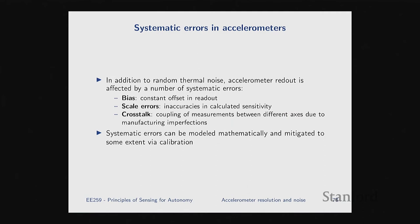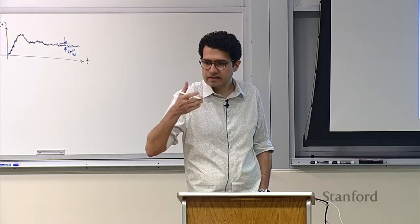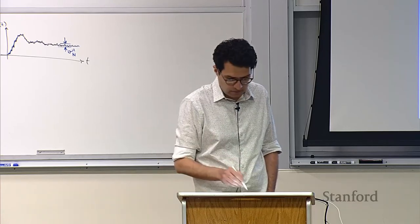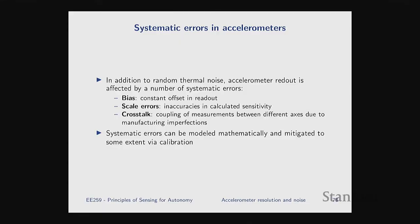In addition to noise, there are also systematic errors in the measurements you get out of the accelerometer. Specifically there are three effects. First is bias — a constant offset in your readouts — which can come from manufacturing non-idealities: maybe your proof mass at rest is not perfectly centered, or non-idealities in the capacitive sensors. Second is scale errors — inaccuracies in the calculated sensitivity. Since sensitivity is a function of proof mass M and spring constant K, if the actual values differ from assumed values due to manufacturing tolerances, those show up as scaling errors.